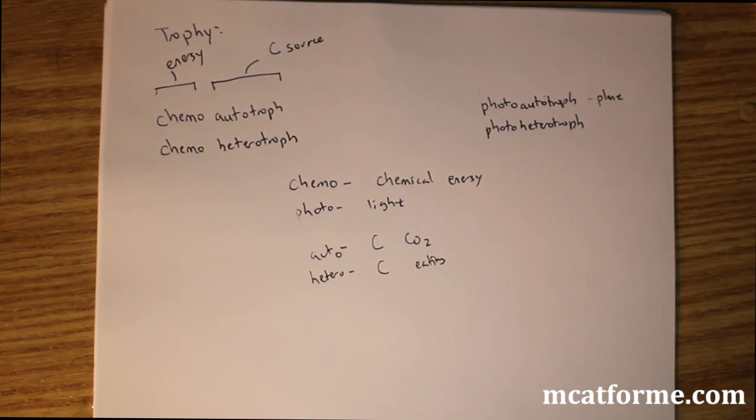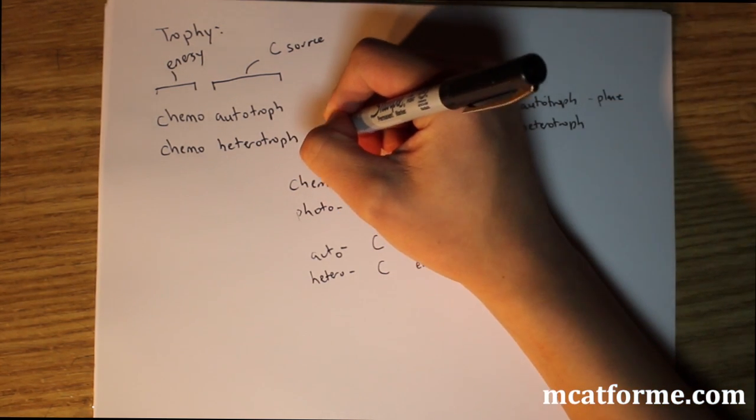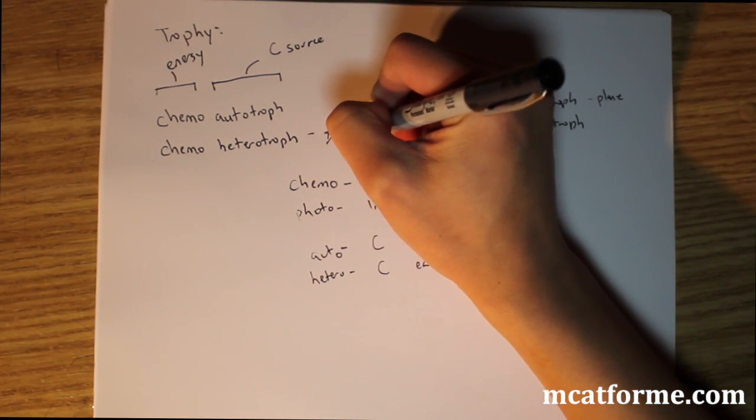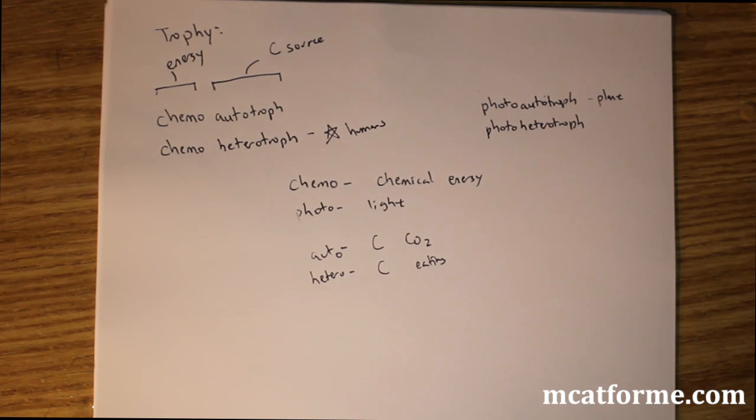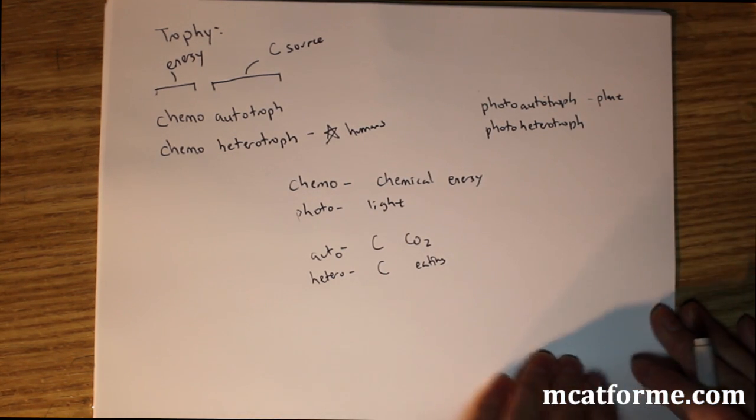And so what would we be? This is the most important one. If we had to identify us as something, what would we identify us as? And we would be right here. We'd be the chemoheterotroph. So that's important to remember. If you don't remember all the rest, that's okay, but just remember what we are at least.